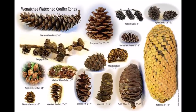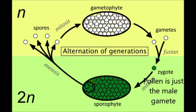Even the coniferous structures that produce pollen — the cones — have been used to study the past. The structure that produces the gametes in a plant is called the gametophyte, and all of its cells are haploid, meaning they only have half their full complement of chromosomes. When the gametes or pollen combine, they form a zygote with the full complement of chromosomes. This zygote undergoes mitosis to become the sporophyte, which then undergoes meiosis to produce spores, which go through mitosis to produce the gametophyte, thus returning to the starting point.